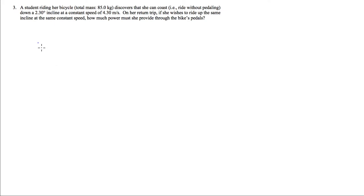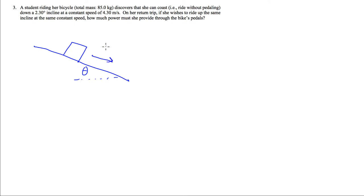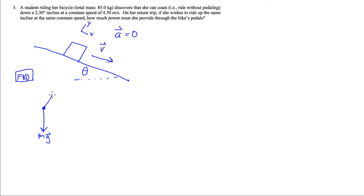Here's a girl riding her bicycle down a hill at a constant speed. The hill is at an angle theta, which is very small. She's going at a speed of 4.30 meters per second. Since she's going at a constant speed, acceleration is zero. I'll set up x and y axes and draw a free body diagram to talk about the forces acting on her. She's going to have weight, and there's a normal force.